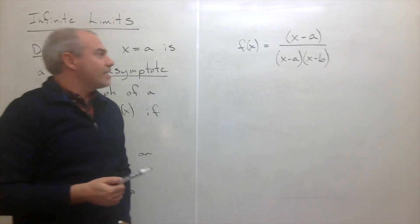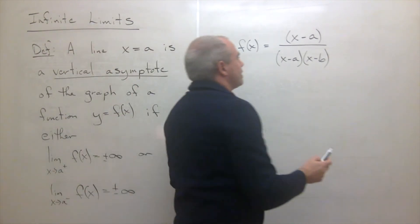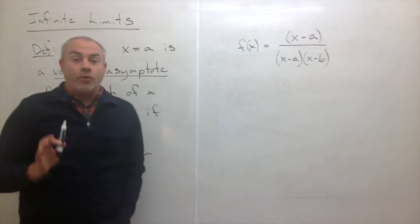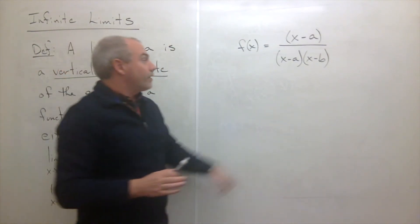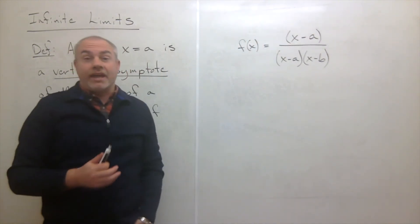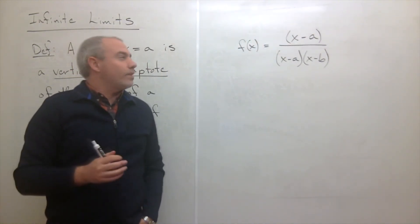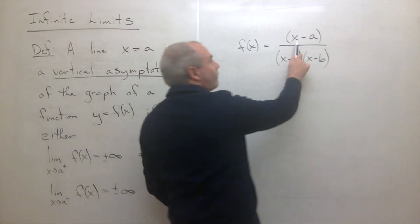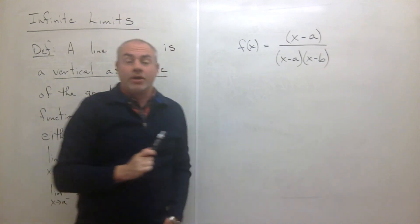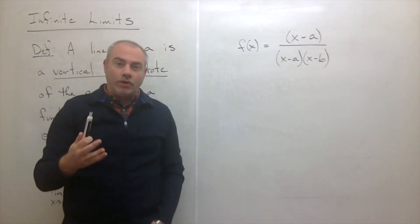What does that tell me? Well, that tells me that in some sense, other than at the point a, I could cancel these guys out. If x is equal to a, I can't cancel them out. So what's happening here? When I have a factor x minus a on top and x minus a on bottom, what's happening is there's a hole in the graph.